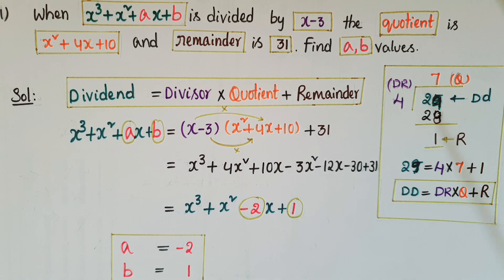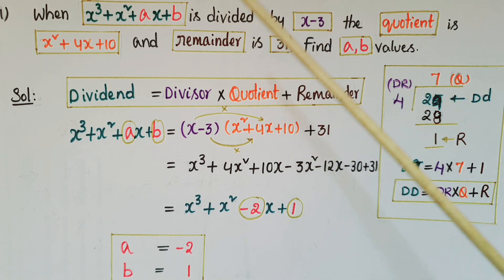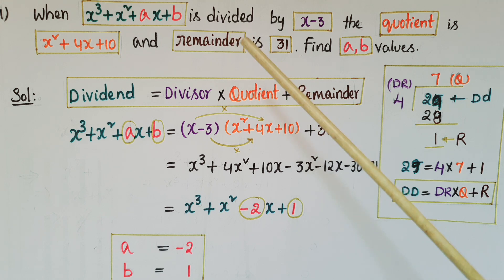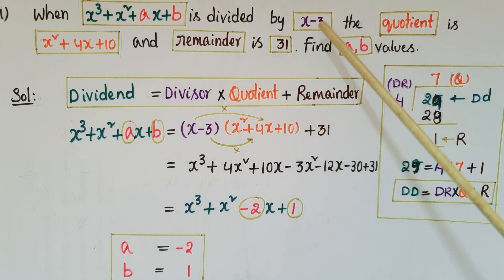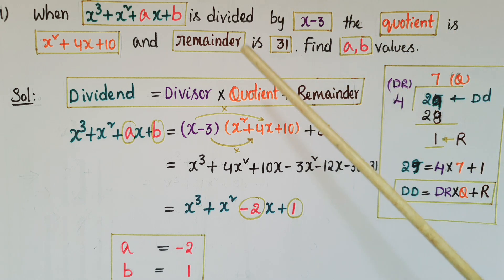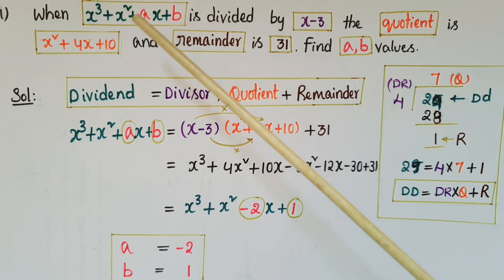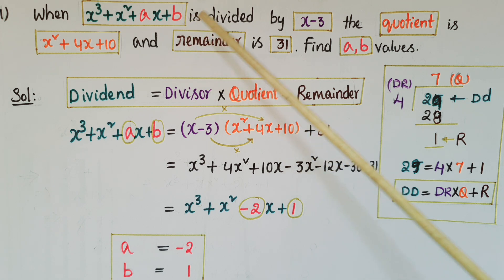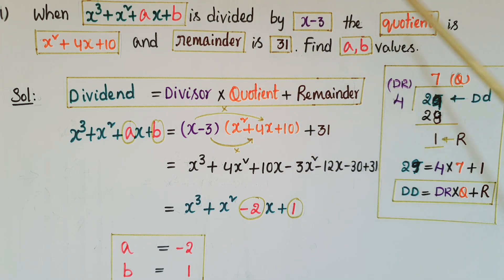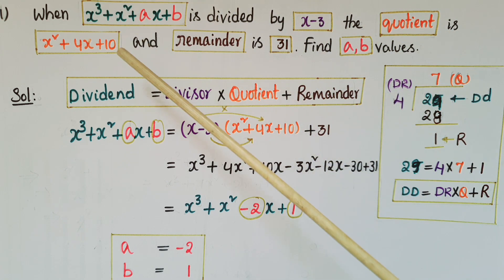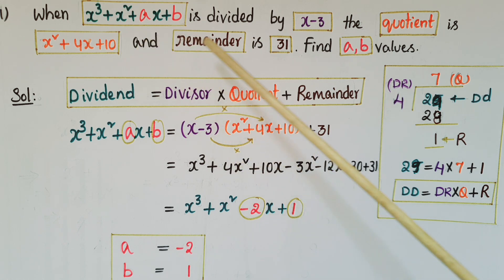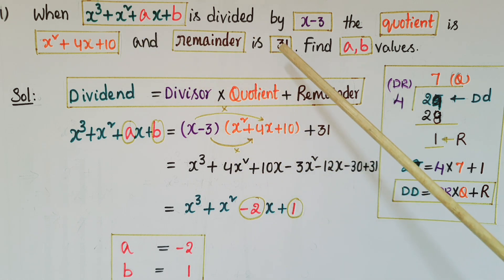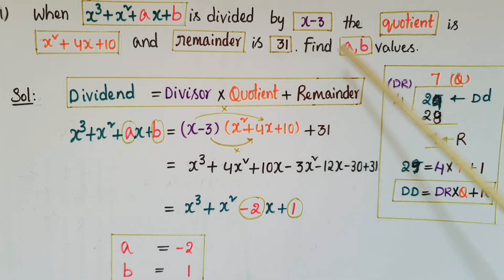Hello everyone. Today I am going to show how to find a and b values in a polynomial. The problem: when x cube plus x square plus ax plus b is divided by x minus 3, the quotient is x square plus 4x plus 10 and the remainder is 31. Find the a and b values.